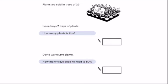Plants are sold in trays of 20. Look at the tray here. There are 20 plants. Ivana buys 7 trays of plants. How many plants is this? So she buys 7 of those trays of 20. How many plants does she buy? Press pause while you work it out.